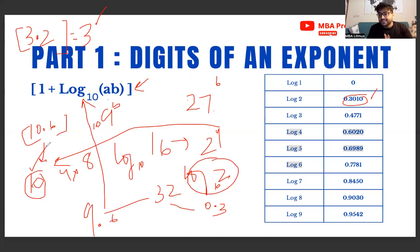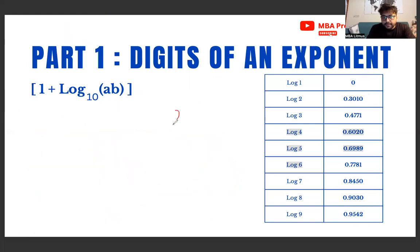Let us apply it to 27^6. My number is 27^6. I will take log with base 10, so this becomes log 27 base 10. Now 27 I can write as 3^3.